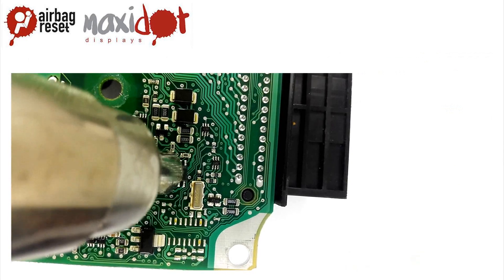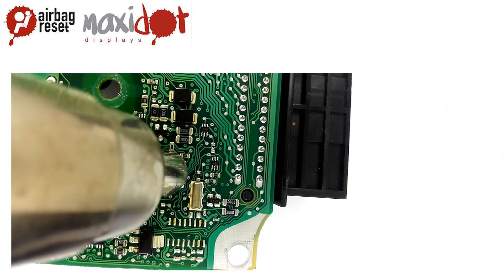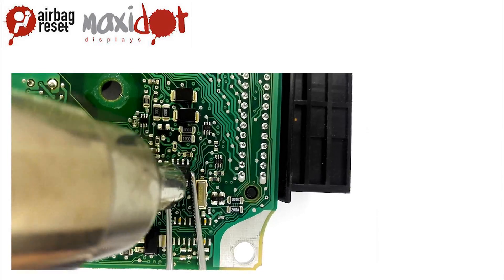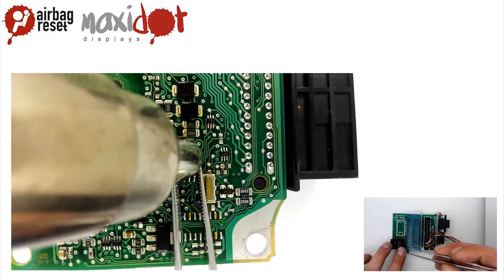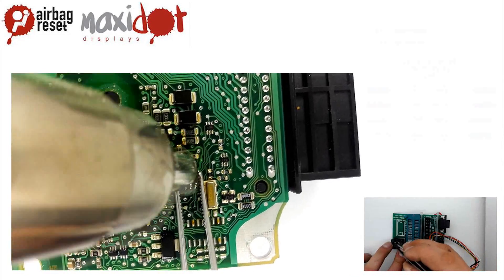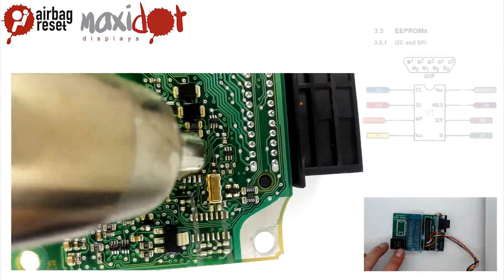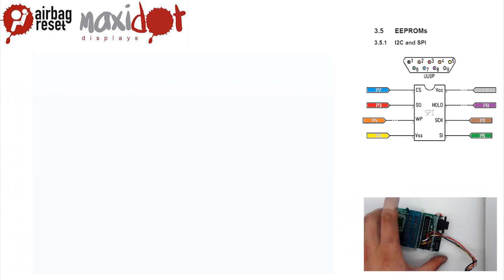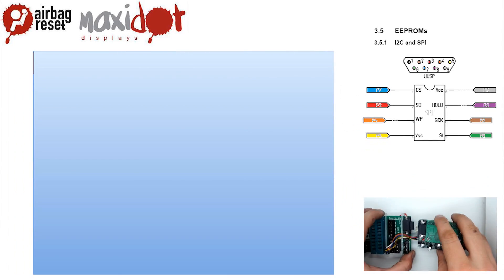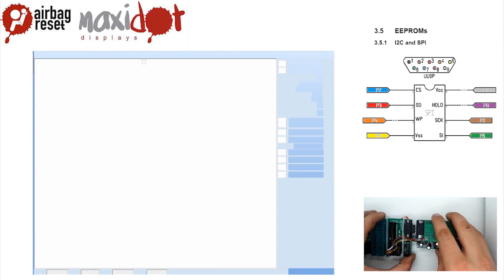Remove the EEPROM from the board and insert it into a programmer socket. Connect to the programmer. In the programmer menu, select the desired EEPROM and choose the Read option.